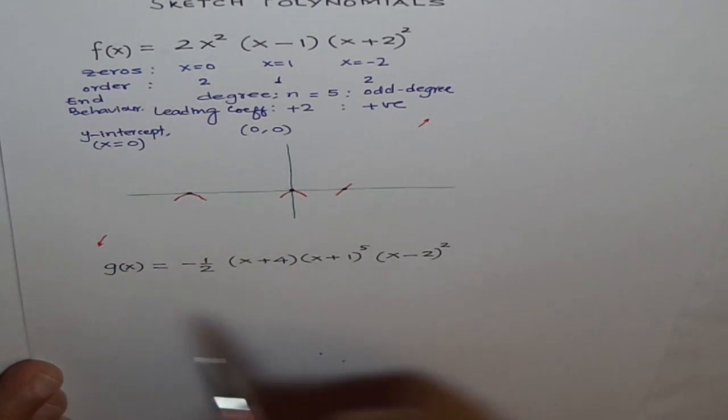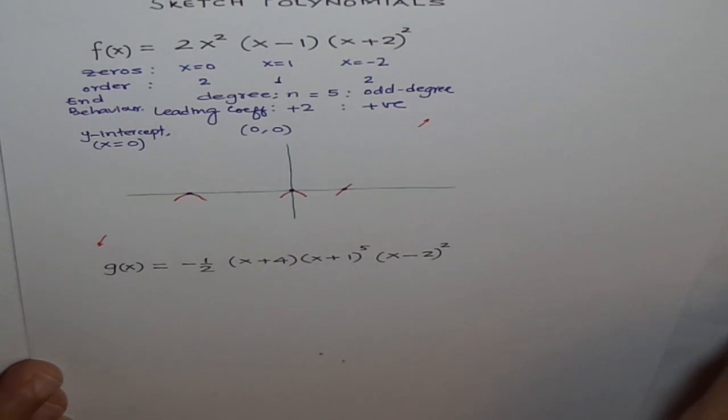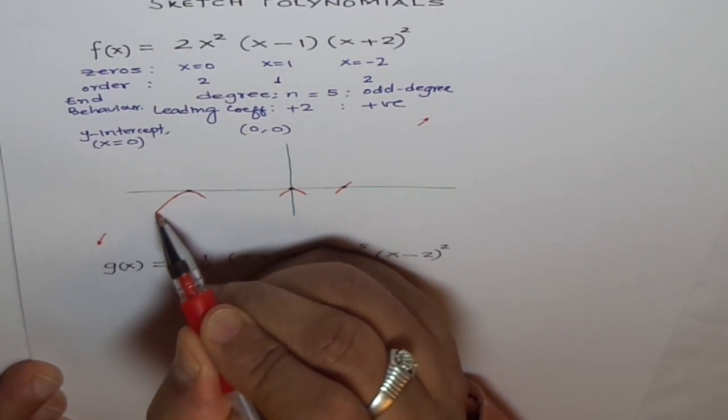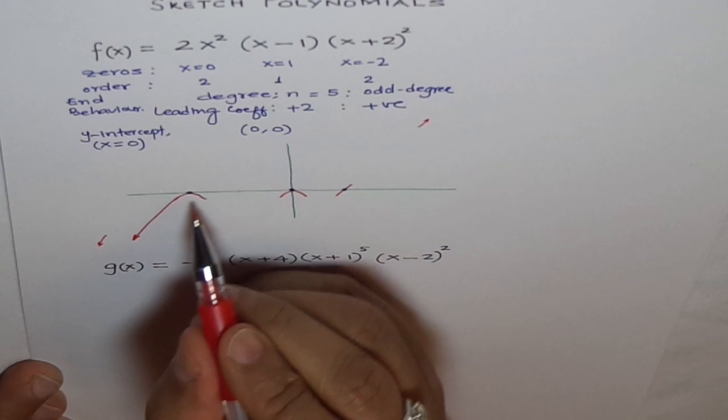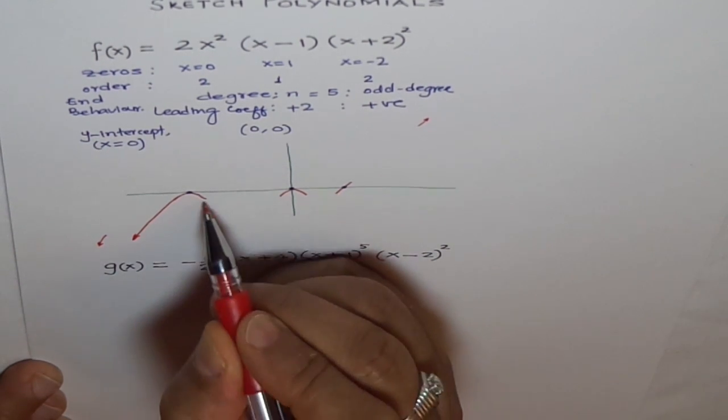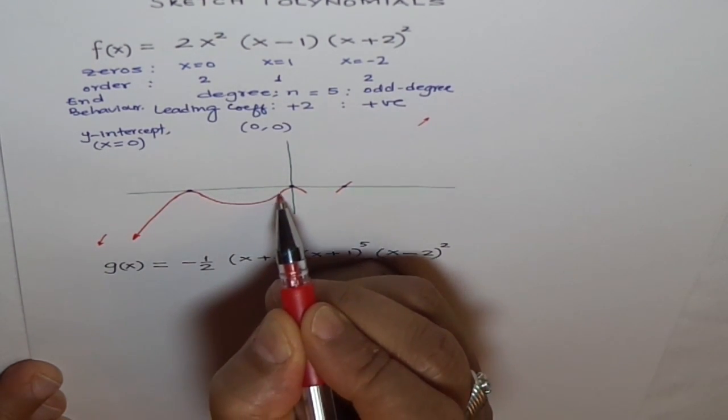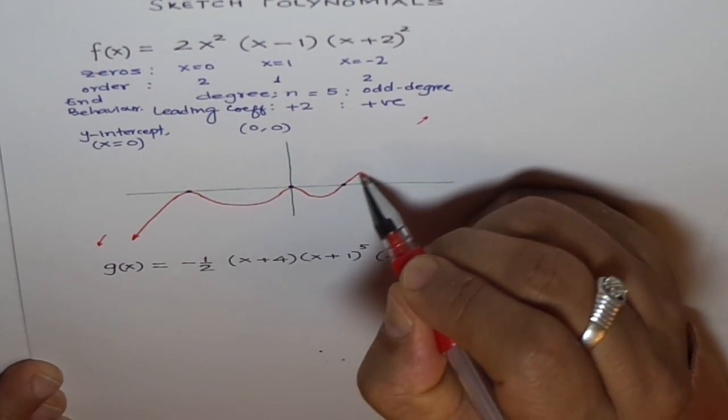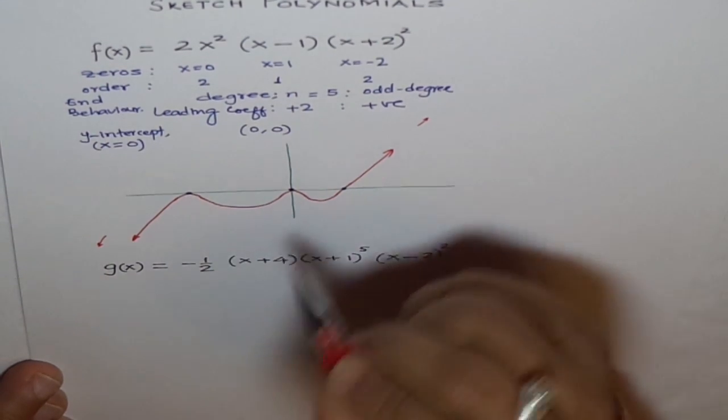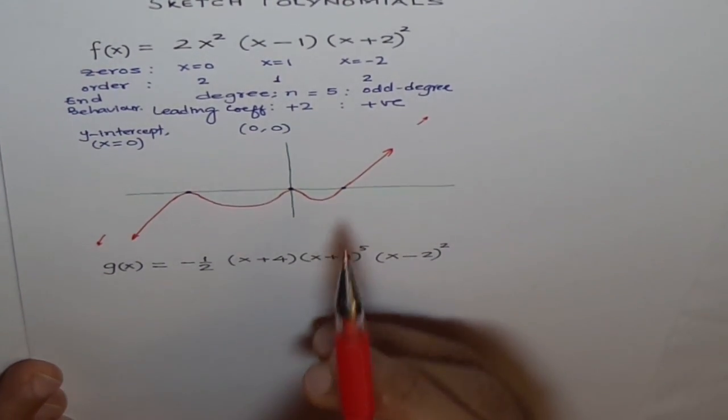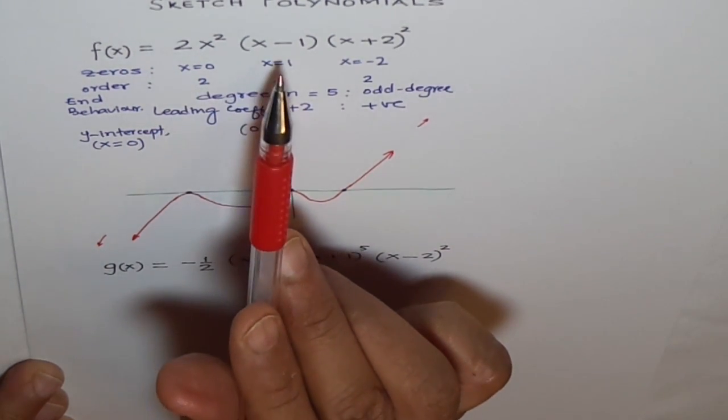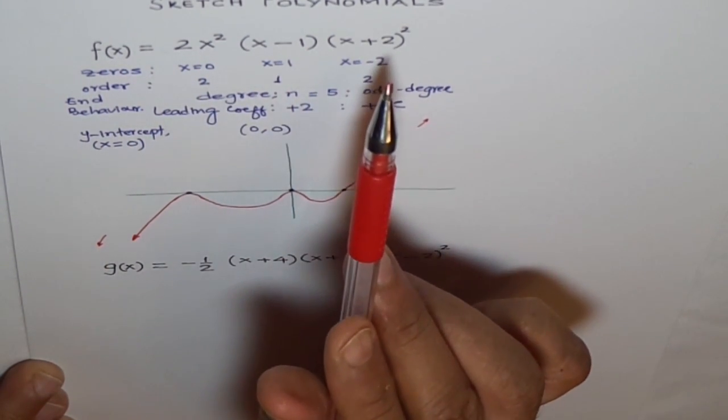Now, what we are going to do is just connect them and draw our graph. We can see it like this, and now we are going to connect these points to a smooth curve. This parabola represents the function f(x) equals 2x squared times x minus 1 times x plus 2 whole squared.